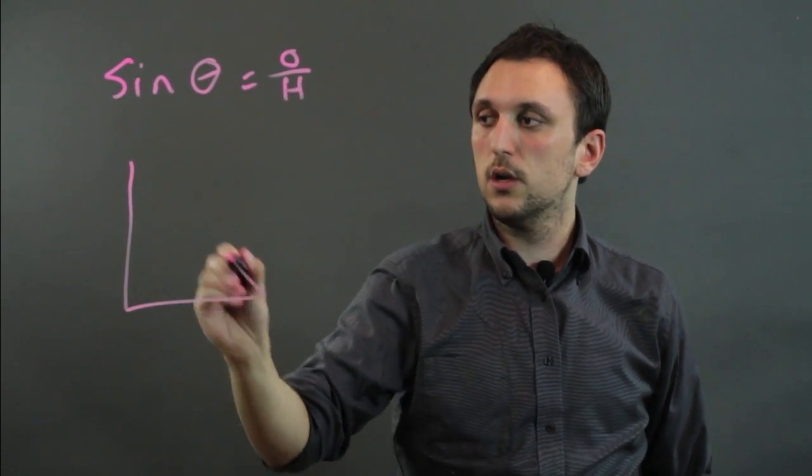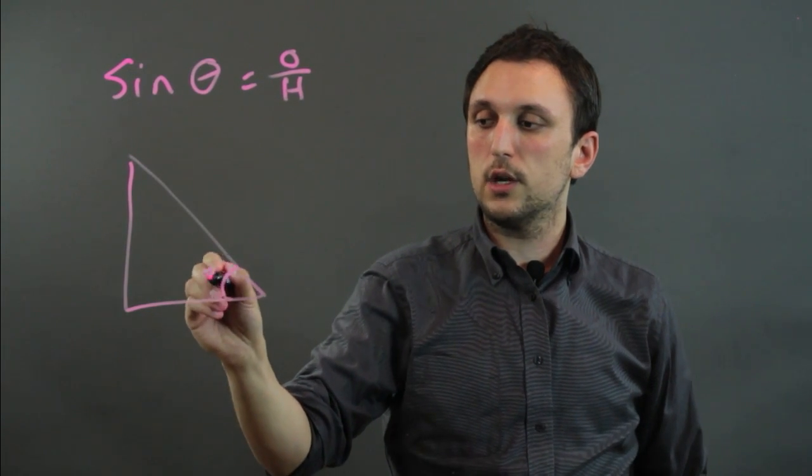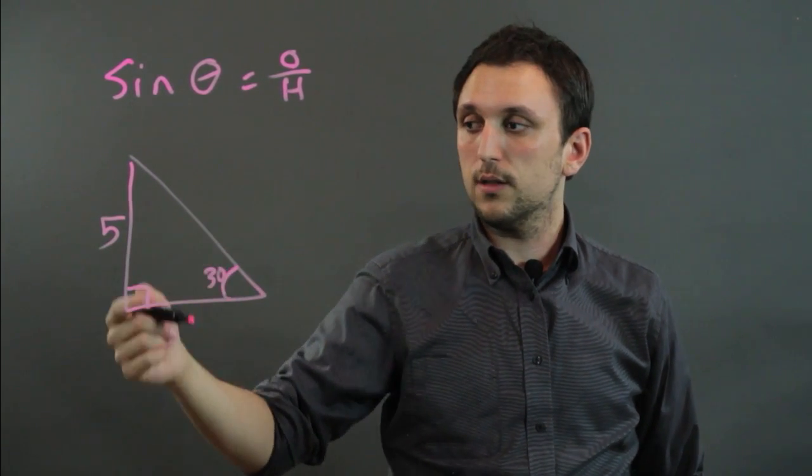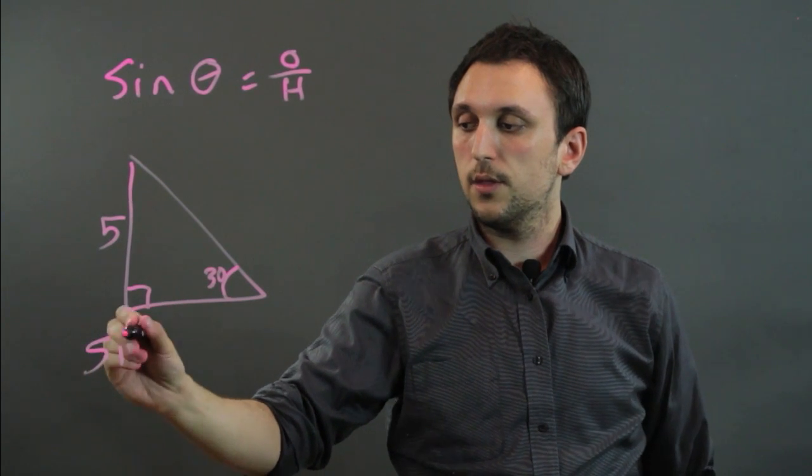So if we have a triangle here and let's say we have 30 degrees and we know this is 90 and we have this is 5, well we can say sine 30